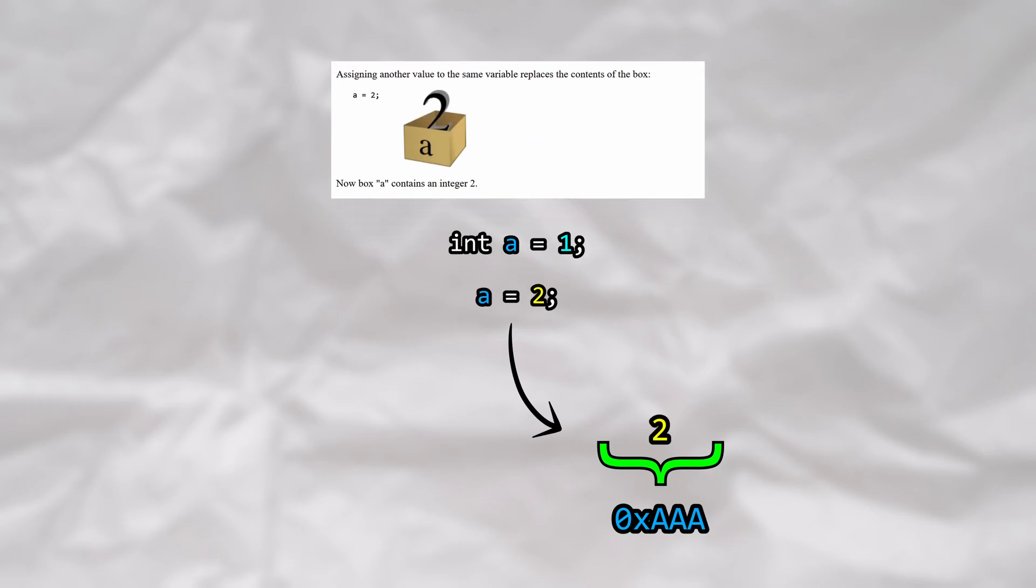If you now assign the integer 2 to variable a, 2 will now take place of 1 in the same box, and variable a will still point to the same memory address. This is quite simple and intuitive. However, this is not how Python works.